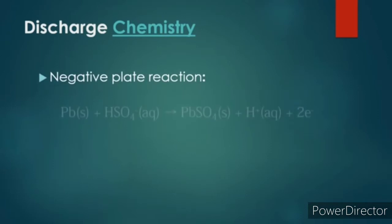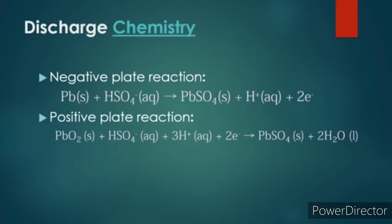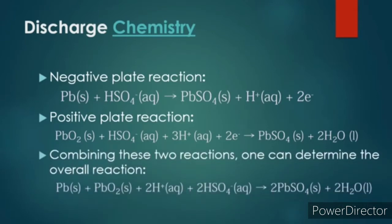At the anode, lead loses two electrons and reacts with hydrogen sulfate to give lead sulfate. At the cathode, lead 4 oxide gains two electrons and reacts with hydrogen sulfate to give lead sulfate and water. Combining these two reactions we get the overall reaction.